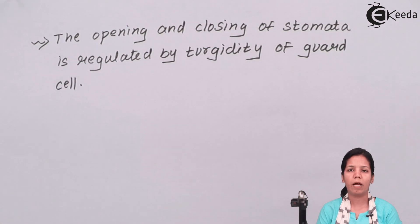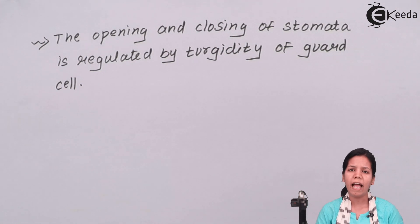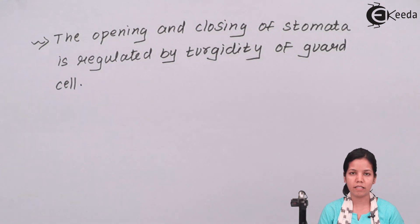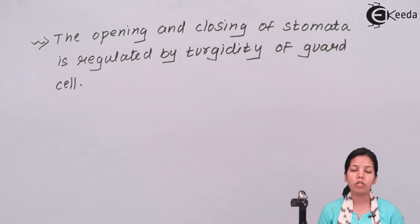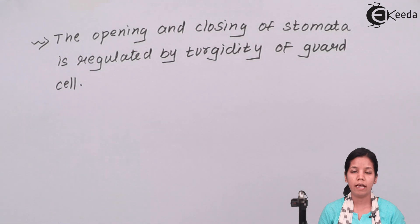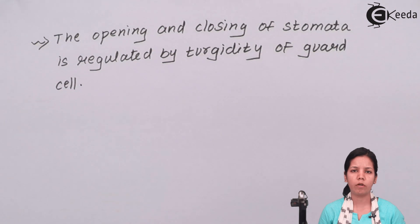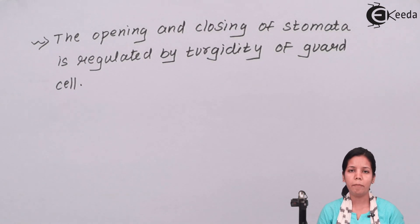Students, in this part of the chapter we have studied the significance and importance of turgidity and plasmolysis, which are two vital functions that take place inside a plant cell. If they are not present, certain molecules could not enter or move outside the cell, and the process of transpiration would be hampered. I hope we are all clear with the concept of turgidity and plasmolysis and their importance. Thank you.